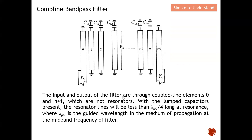The input and output of the filter are through coupled line elements zero and m+1 — zero is the input and m+1 is the output; they are not resonators. For resonators one through n, with the lumped capacitor present, the resonator line will be shorter than quarter-wave long at resonance, where lambda-g0 is the guided wavelength in the medium of propagation at the mid-band frequency. The lumped capacitor allows the transmission line length to be shorter.